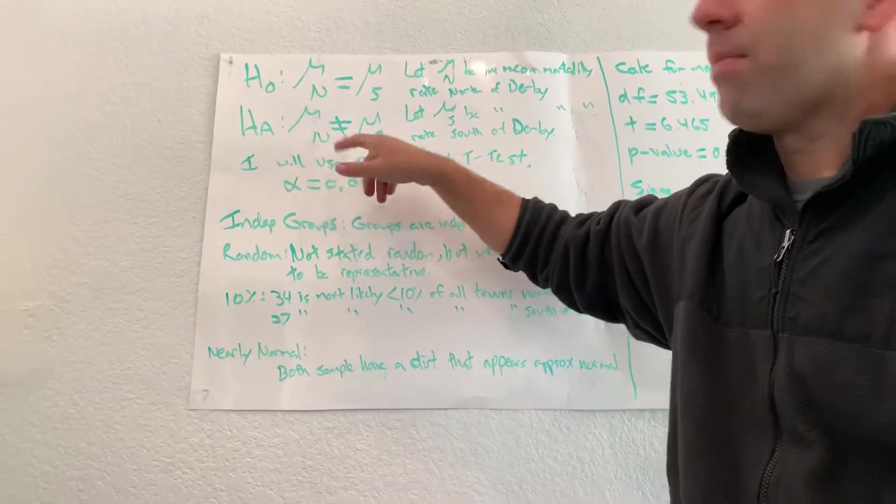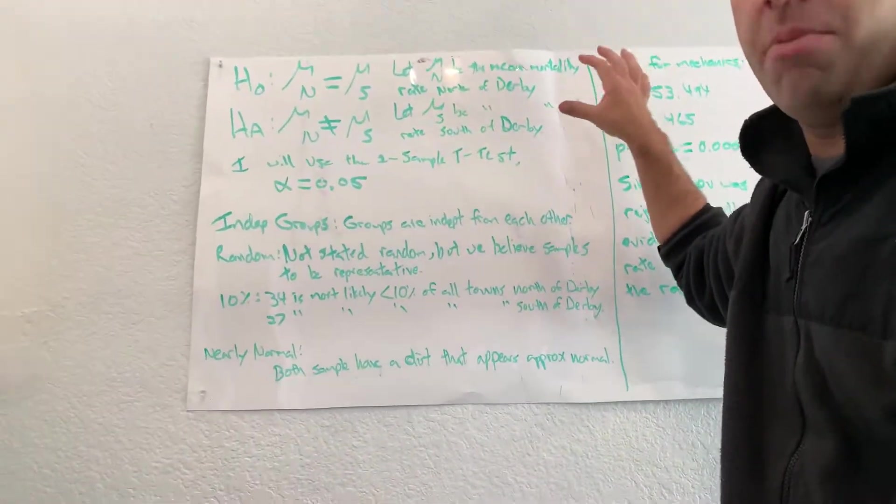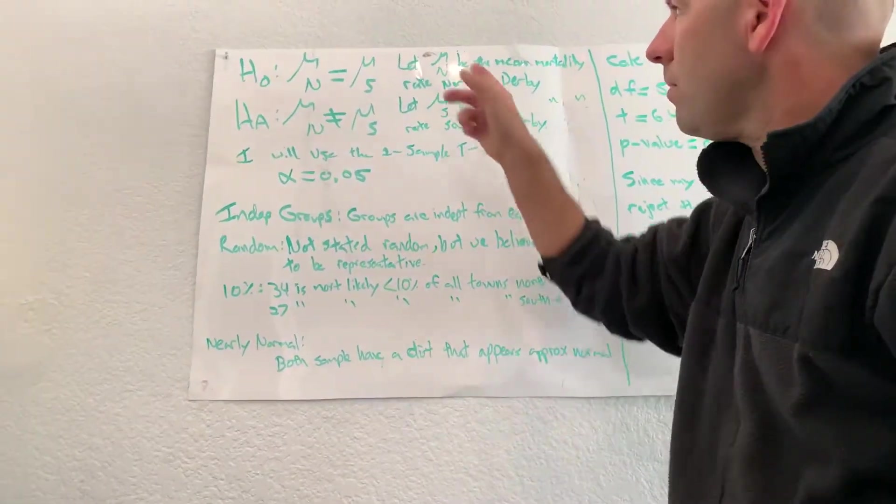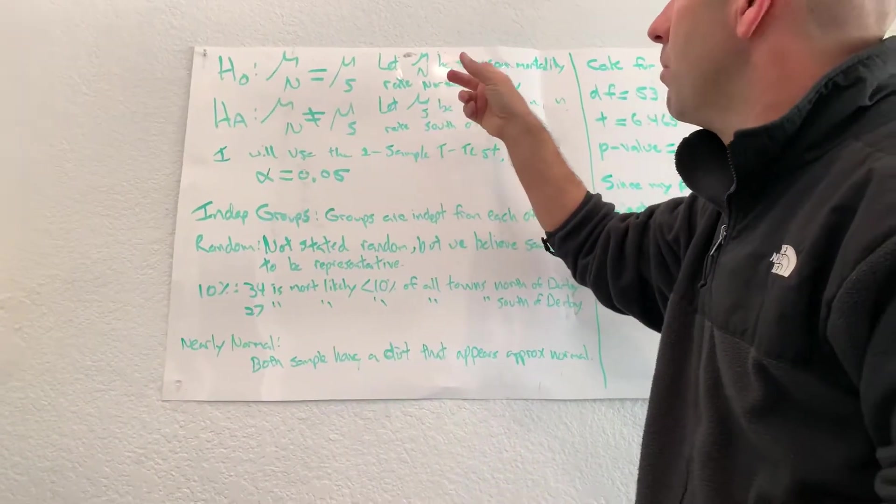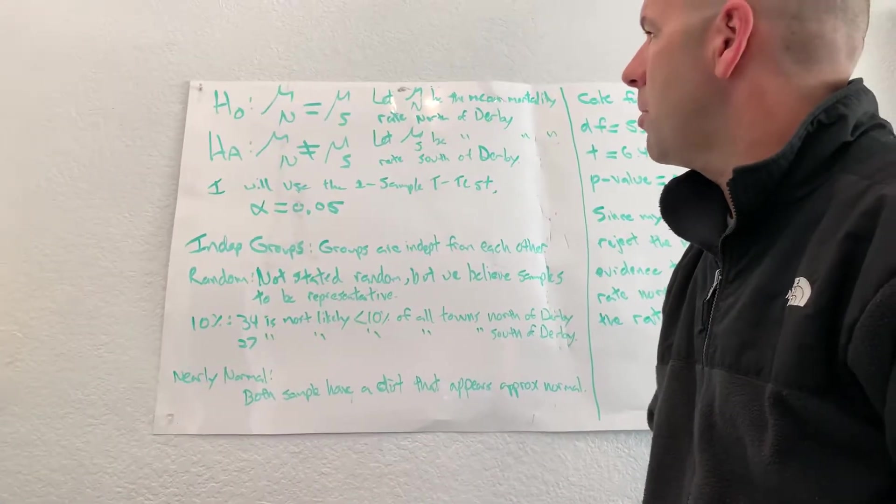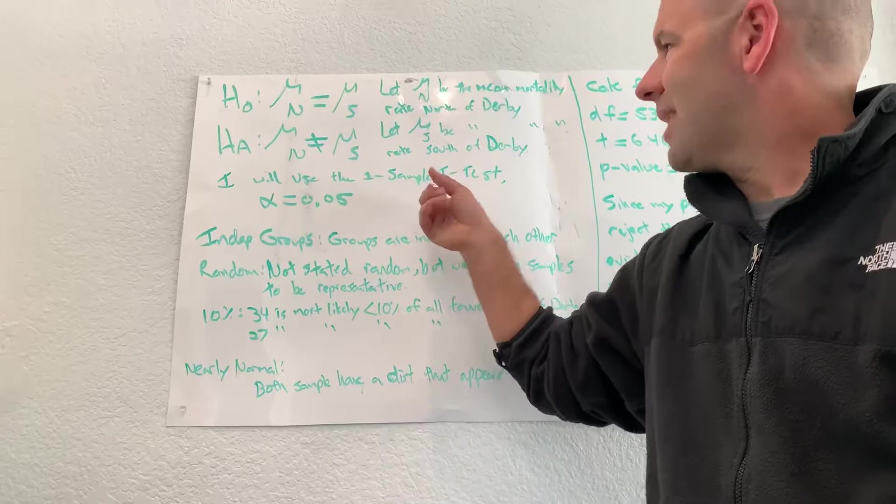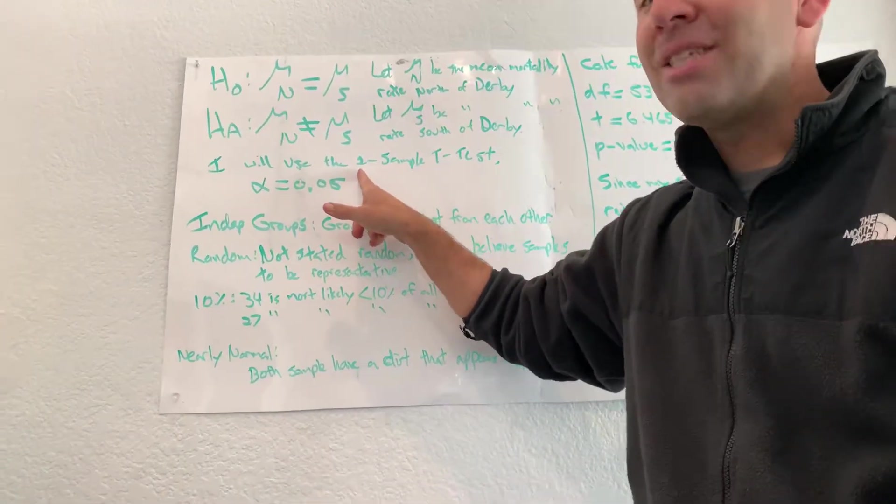Always got to define your variables. In this case, I have two variables to define, so I define both of those. Let μ sub n be the mean mortality rate north of Derby and then μ sub s south of Derby.